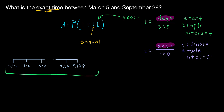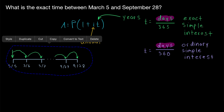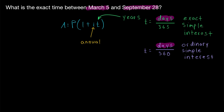Hopefully that seems intuitive: if we invest money on March 5th, we earn interest from the 5th to the 6th, so we count the 6th; from the 6th to the 7th, so we count the 7th; and so on through September 27th to the 28th. We just don't earn any interest on that first day when the investment is made. That's how exact time is calculated — it includes all days between two dates, including the last day but not the first.